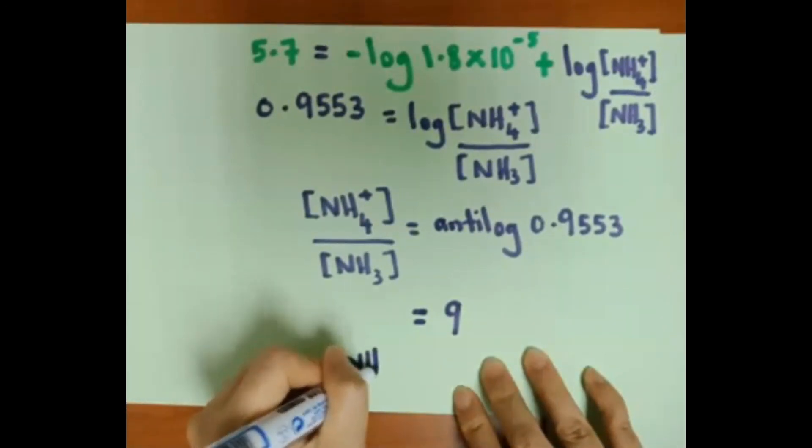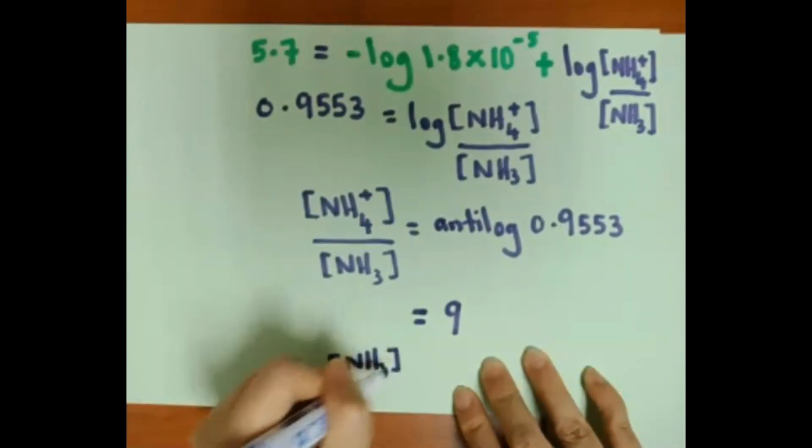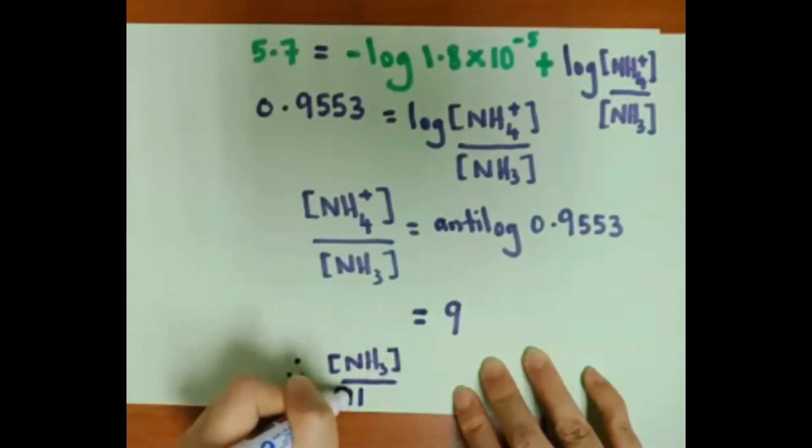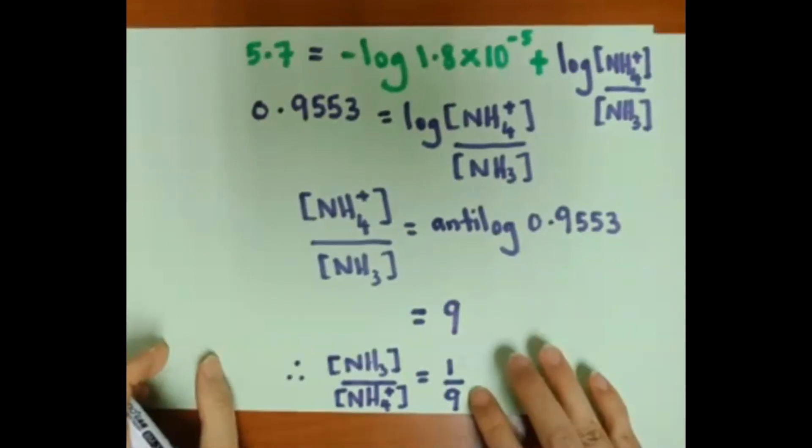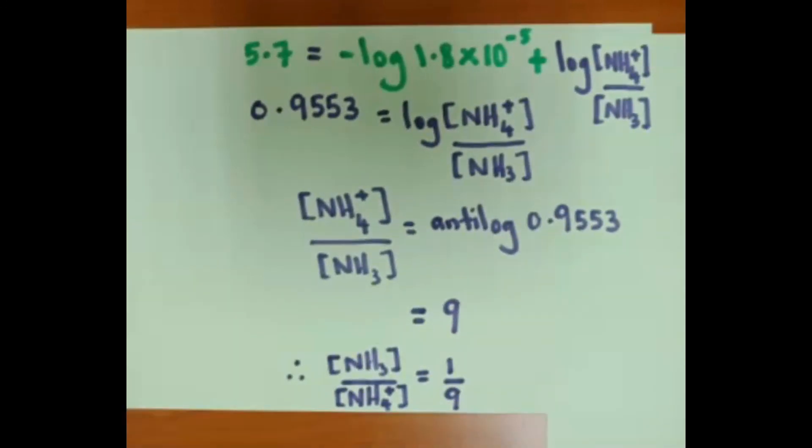The result equals 9, therefore the final answer for the ratio of NH3 to NH4Cl is 1 over 9.